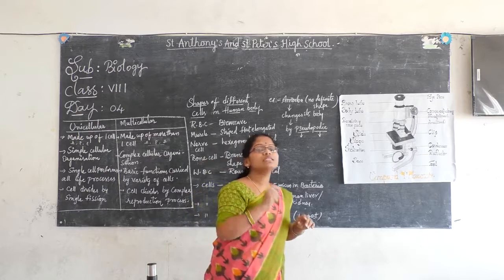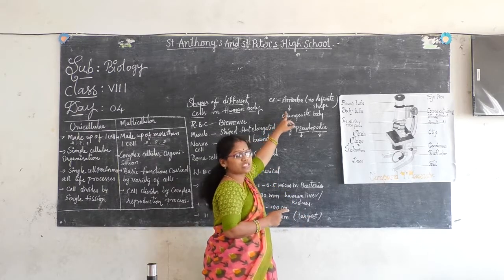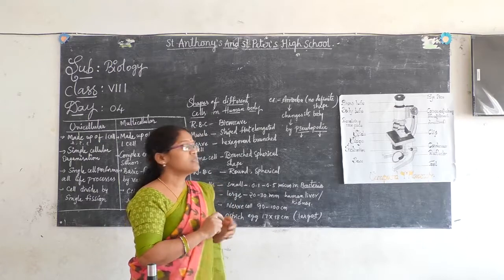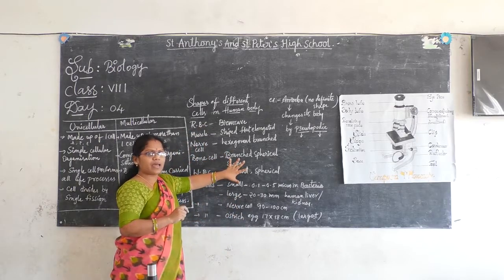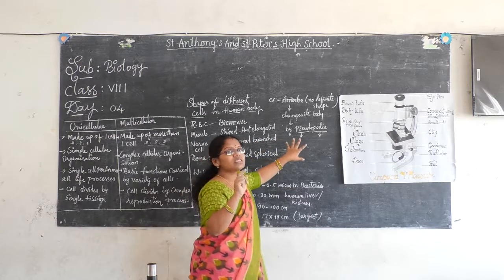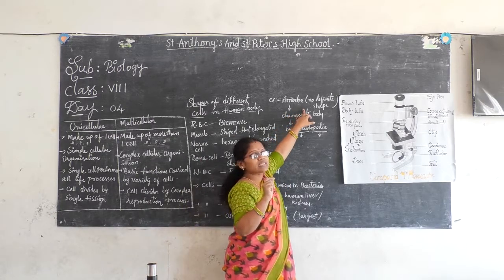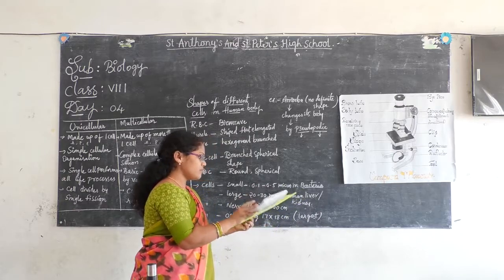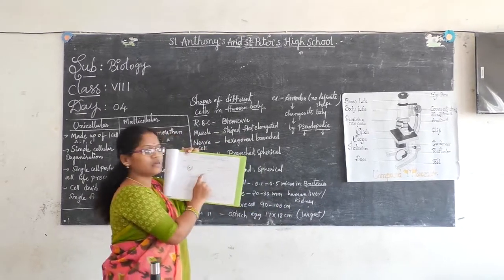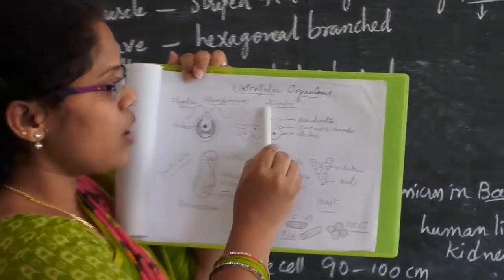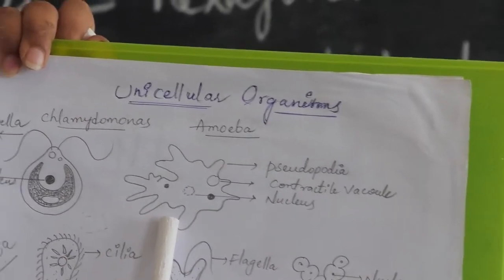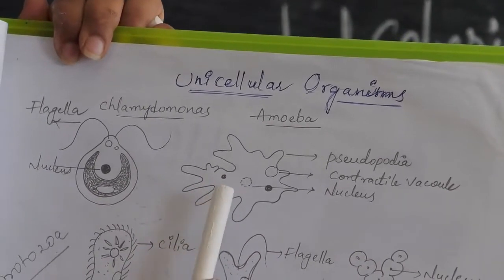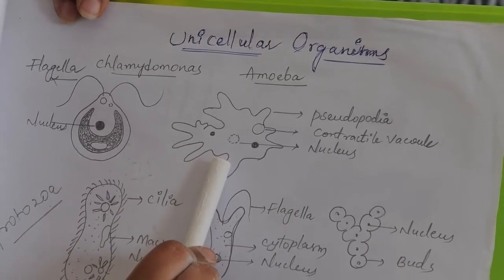When coming to unicellular, we take the example of amoeba. Amoeba does not have a proper shape. Some cells have a particular shape as I showed you, but to some cells they don't have a particular shape. Amoeba is not having a particular shape — it has no definite shape structure. It is irregular in shape.